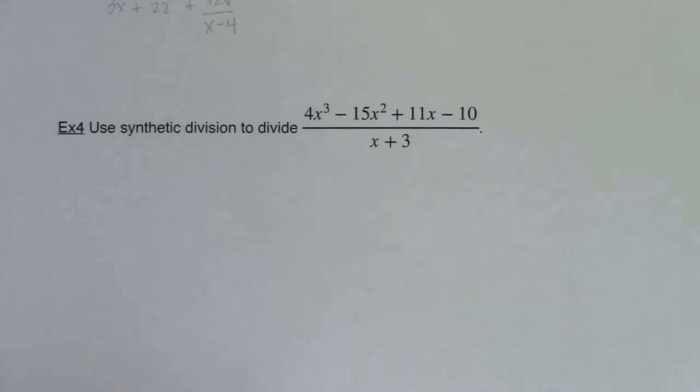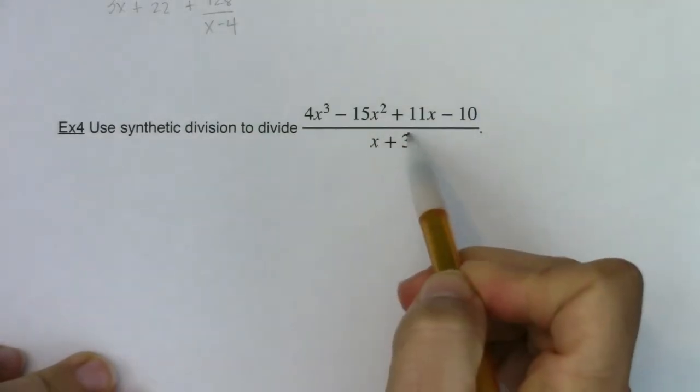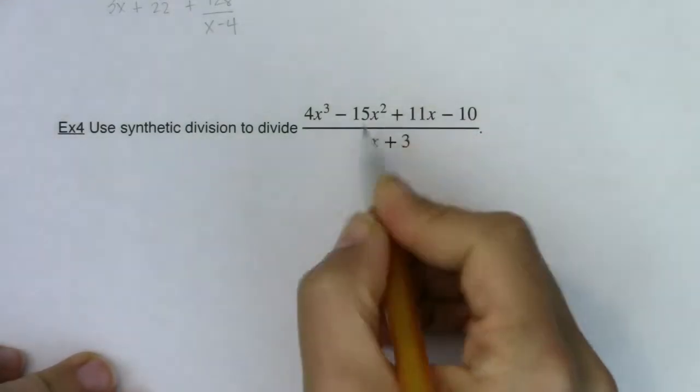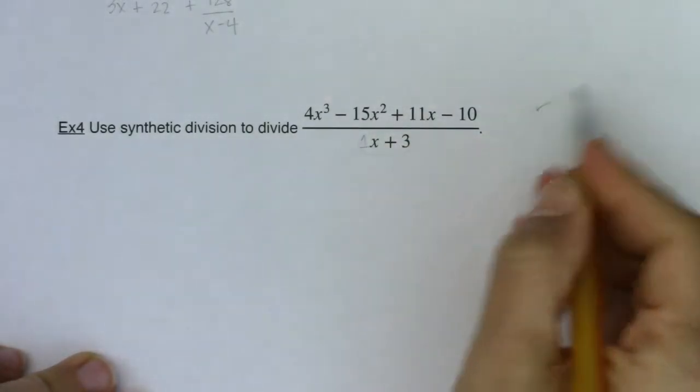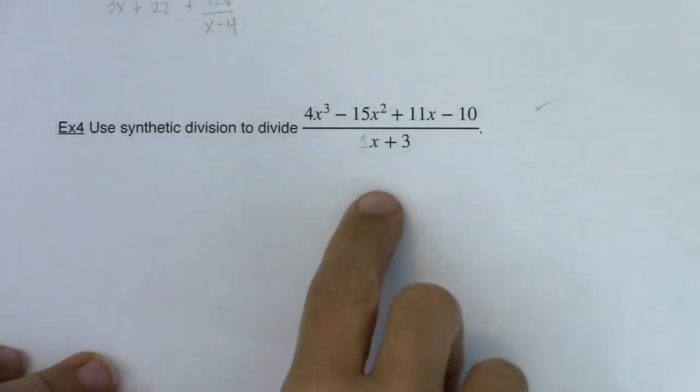Okay, Math 31, we're back with example four. We're still going to use synthetic division. So things I want to take note of: if I look at my divisor, I do have a binomial and my lead coefficient is one. That's good. If it's not one, I can show you a workaround, but it's nice that it is.